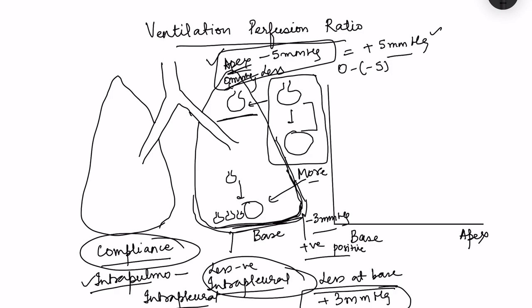So the change in volume with each breath is much less at the apex because those alveoli are already distended. At the apex, ventilation (change in air volume) is less compared to the base. Gravity acts throughout the lung, so the size of alveoli differs at every point. Drawn graphically, ventilation increases from apex to base.